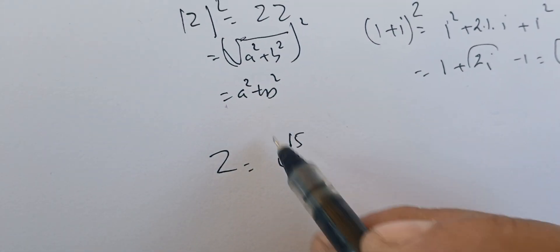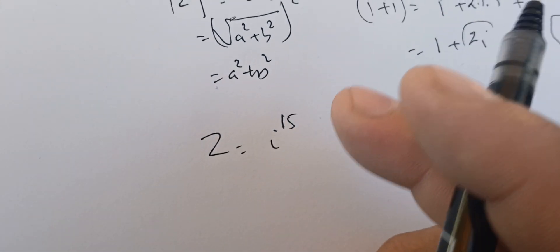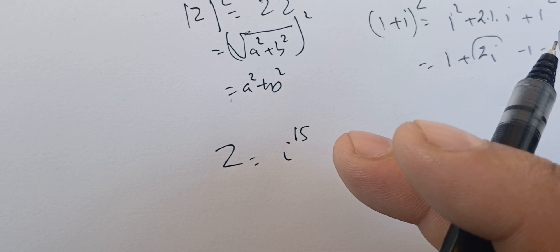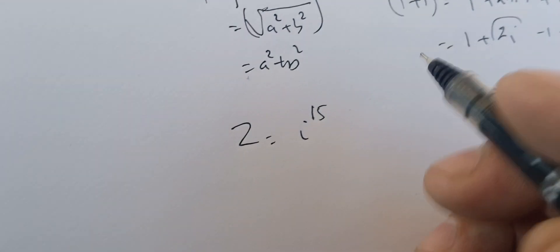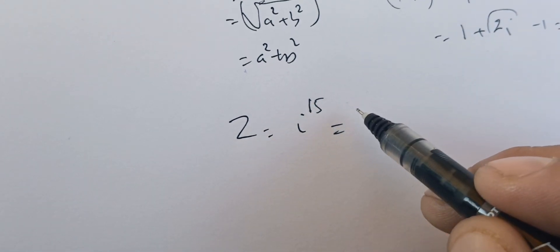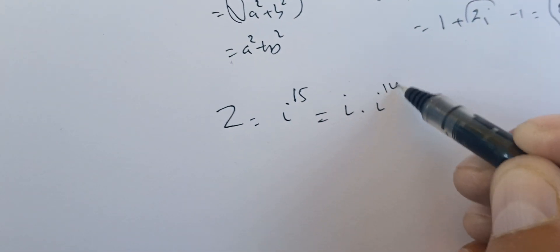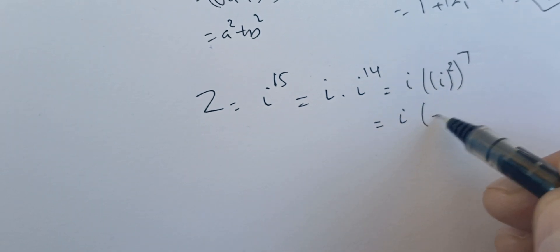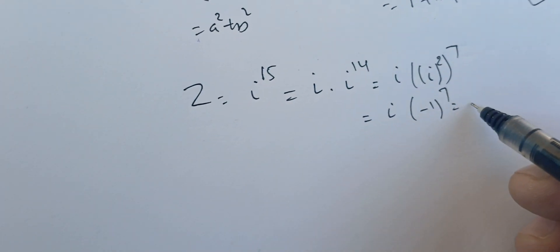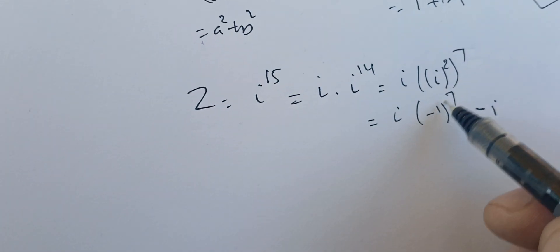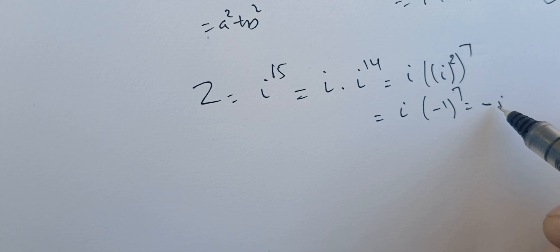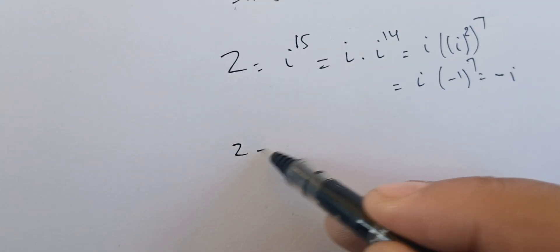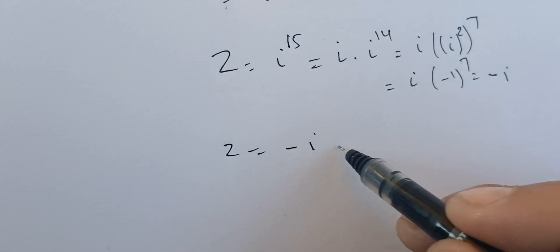Now let's simplify i to the power 15. We write i^15 = i × i^14, and i^14 = (i²)^7. Since i² = -1, this becomes i × (-1)^7. Since (-1)^7 = -1, we get i × (-1) = -i. So z = -i.